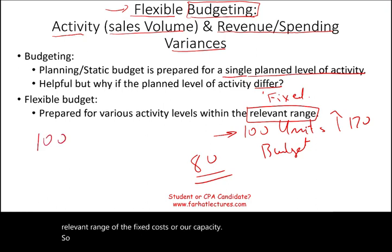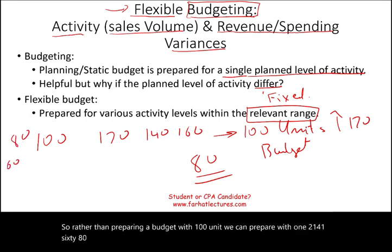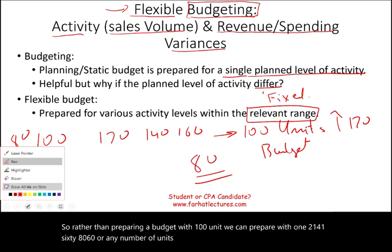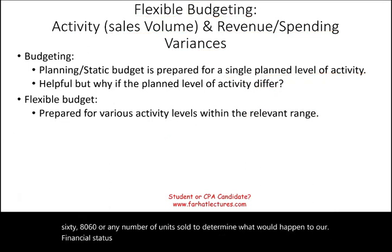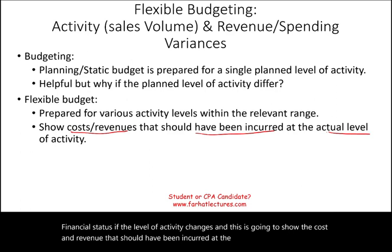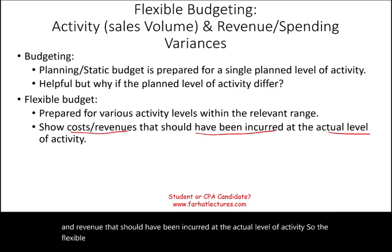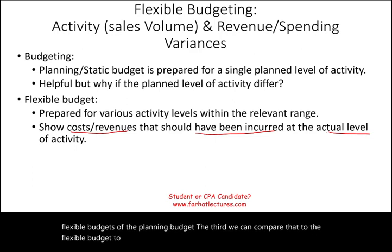Rather than preparing a budget with 100 units, we can prepare with 120, 140, 160, 80, 60, or any number of units sold — to determine what would happen to our financial status if the level of activity changes. This shows the cost and revenue that should have been incurred at the actual level of activity. We prepare a planning budget, then a flexible budget, and if they differ, we compare them to show what we should have had in cost and revenue given that new level of activity.